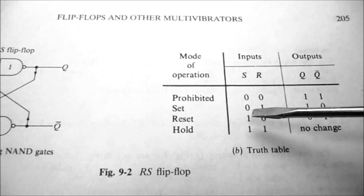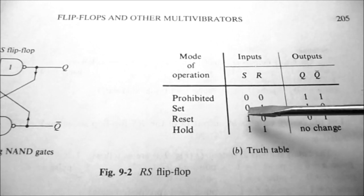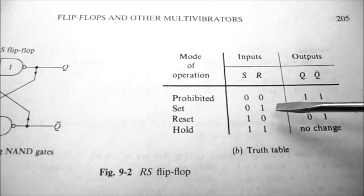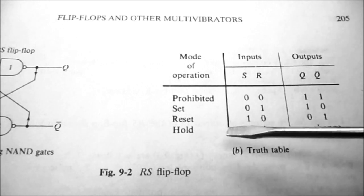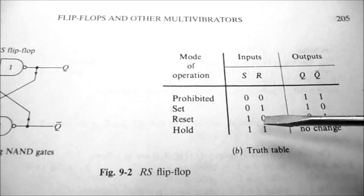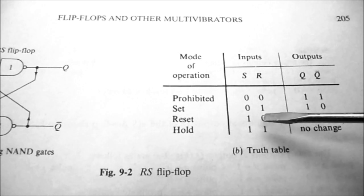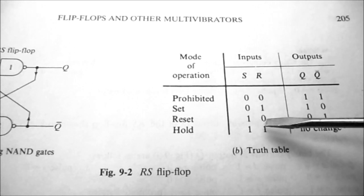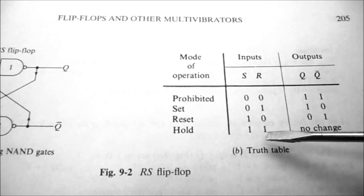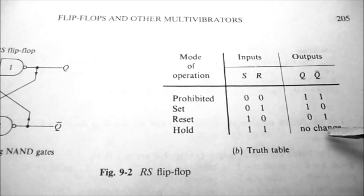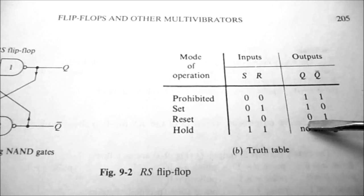To set the flip-flop, the set line goes to zero and the reset line stays at one, giving a Q output of one indicating it's set, with Q-not being the opposite. For reset, we put a zero on the reset line, making Q go to zero and Q-not go to one. When both set and reset are at one, there's no change on the output — if the previous output was zero and one, the no-change state is still zero and one.